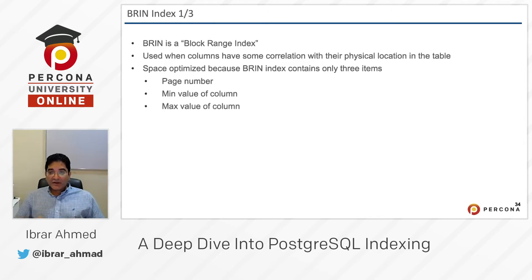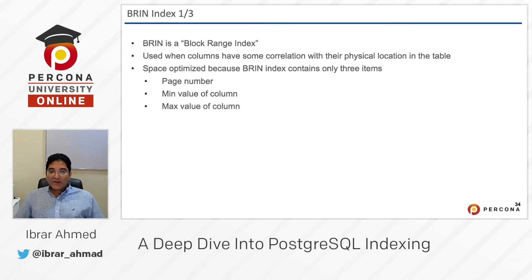So what will it store? We have discussed that the B-tree index stores the CTID and the column index value, and the hash index stores the column and the hash of that column. The BRIN only stores the page number, the minimum value of the column, and the maximum value of the column. That's the beauty of BRIN.